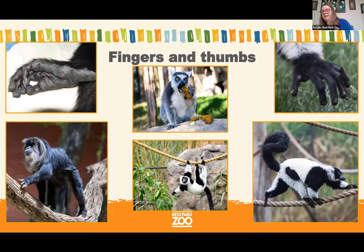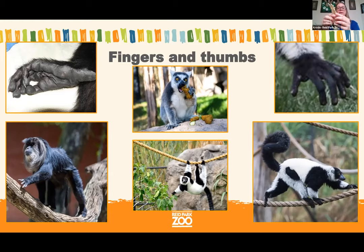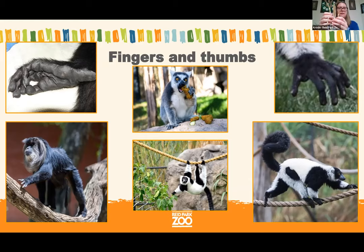I also have a model here — this is a model of the hand bones of an ape, specifically a gibbon. Just like us, it has four fingers and a thumb, but these bones have very long fingers. Those long fingers really help gibbons grab onto branches as they move through the trees.